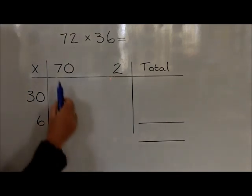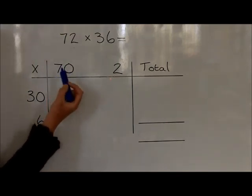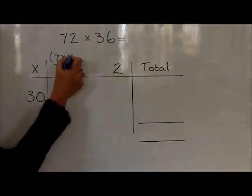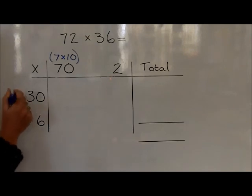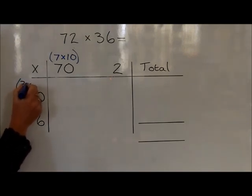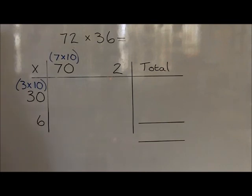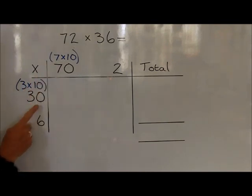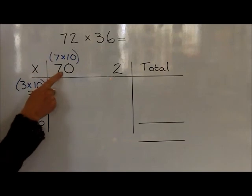We can write the 70 as seven in the tens, so we write it as seven tens above. And we can write the 30 as a three in the tens, which we write as three tens. We now use this bracketed information to help us get to the correct answer for 30 times 70.